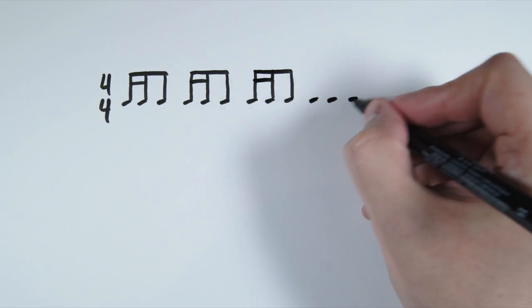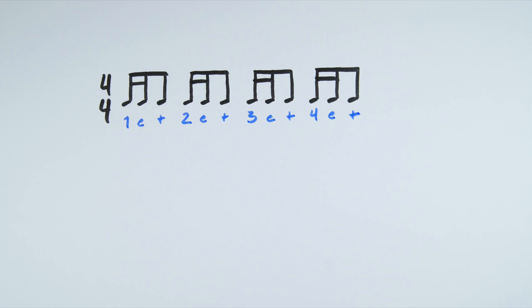If we have a whole measure of this, it would look and sound like this: 1-E-and, 2-E-and, 3-E-and, 4-E-and.